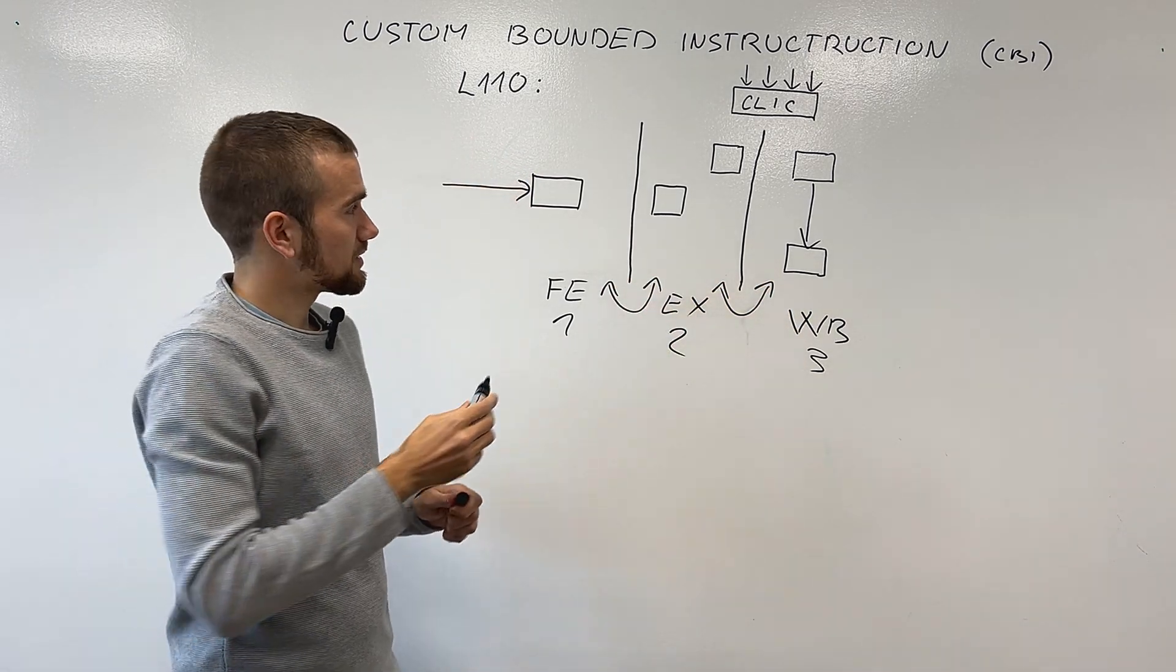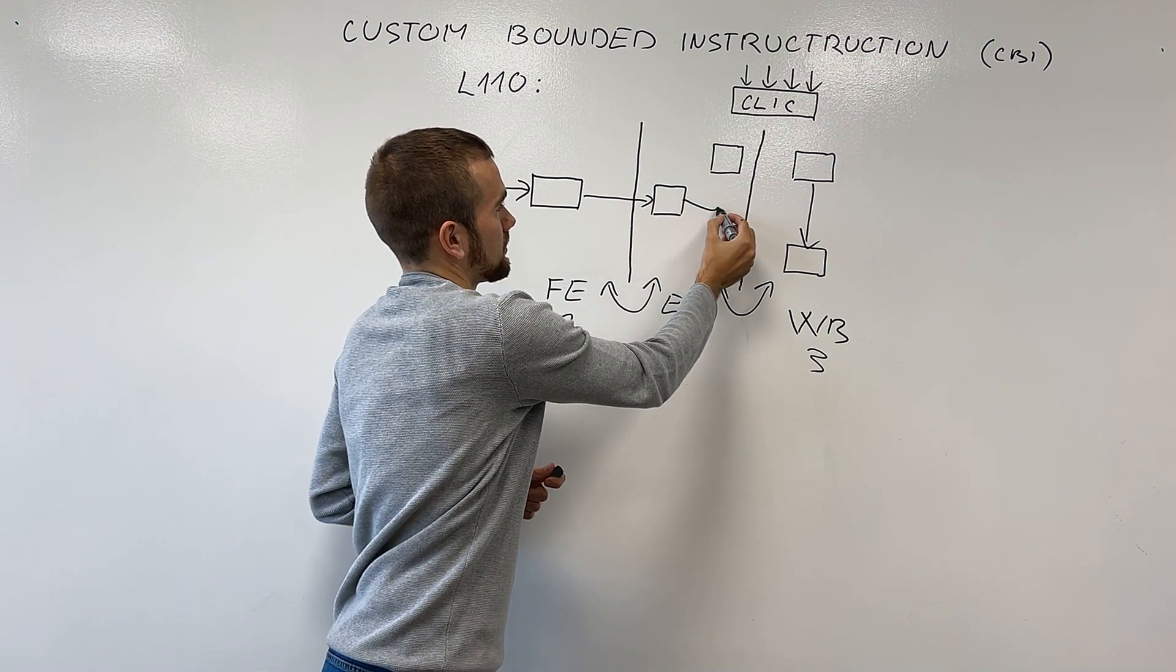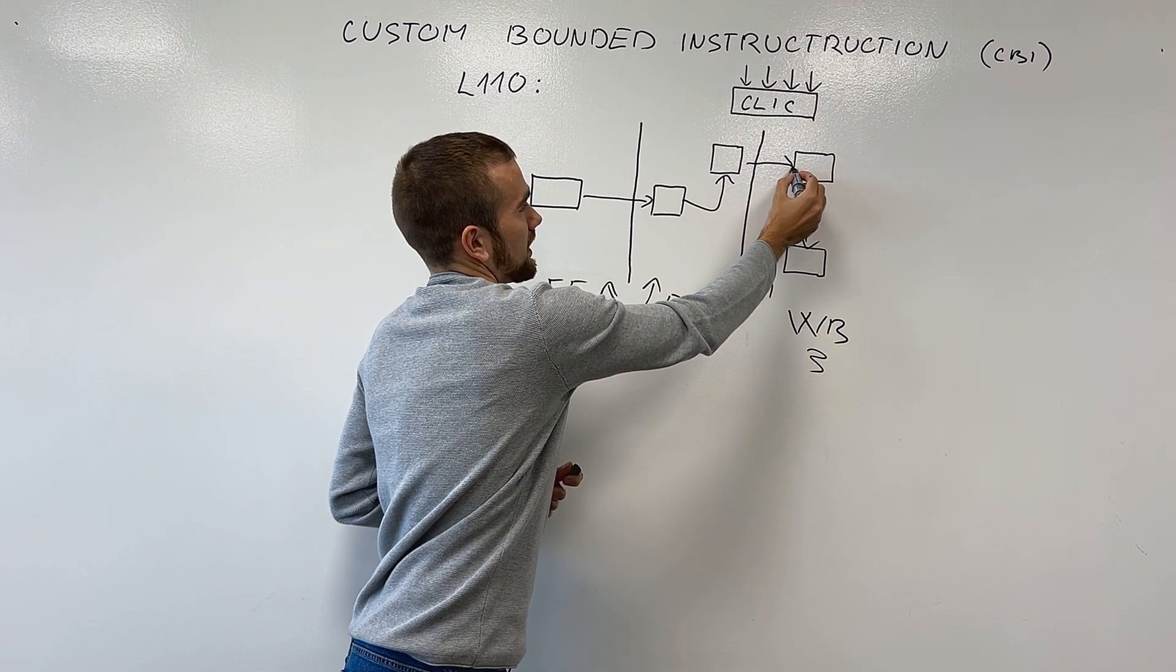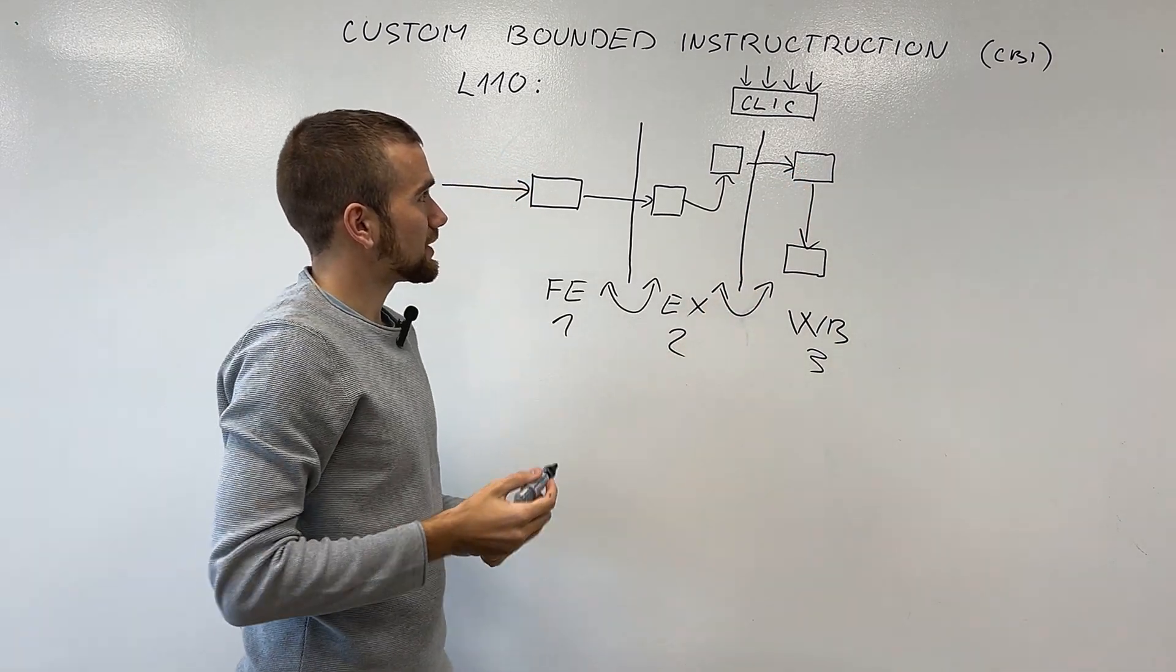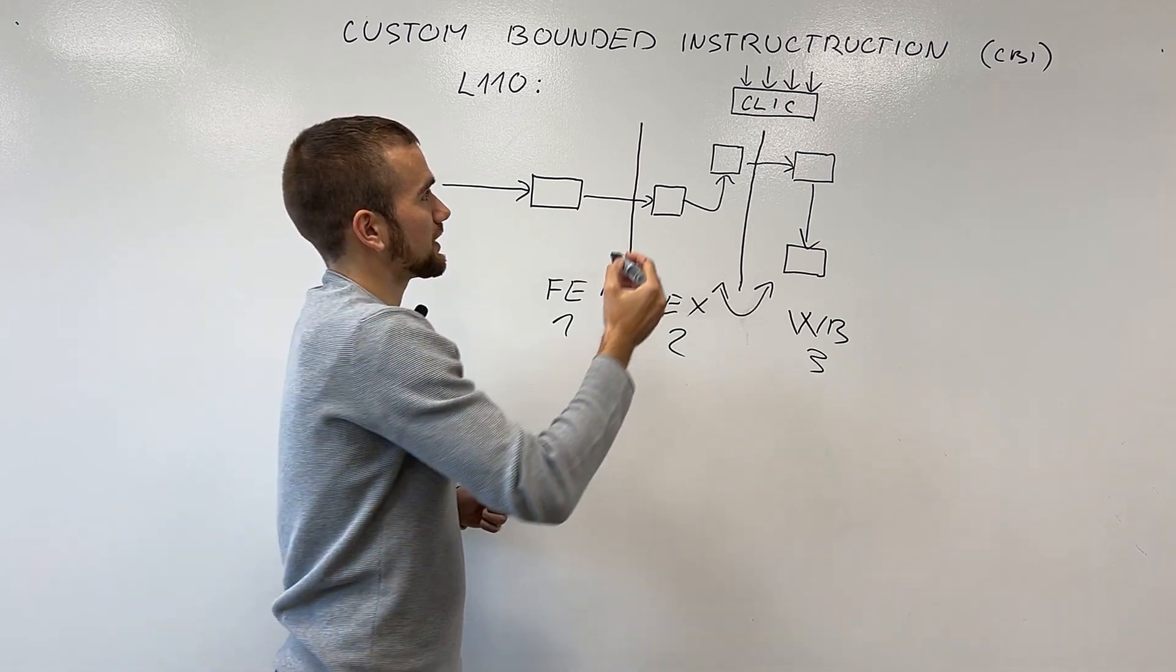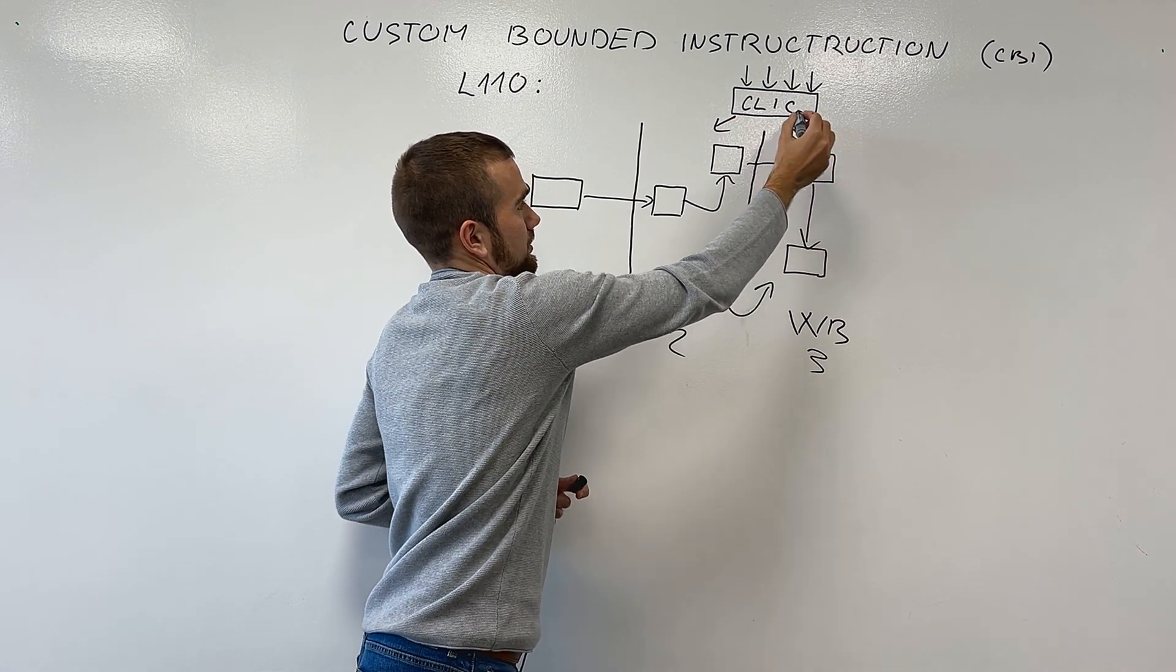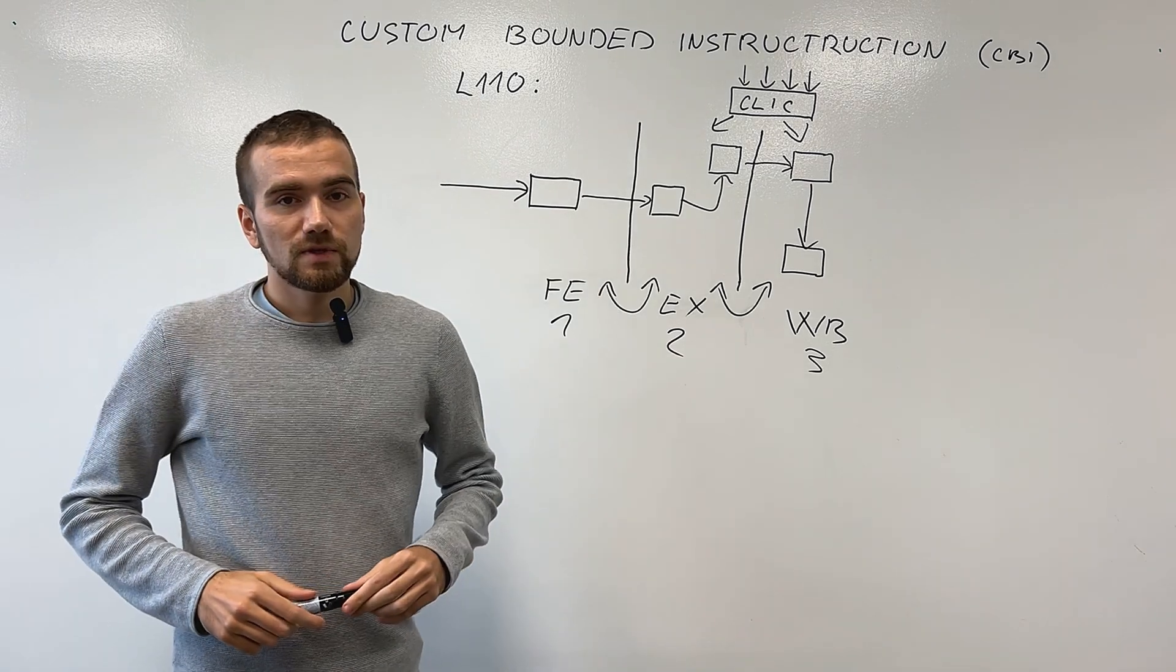The control logic must solve dependencies between the instructions. As the instruction propagates through the pipeline, it's processed by various execution units. And since the L110 targets embedded applications, it must also rapidly react to interrupts while preserving the execution context.